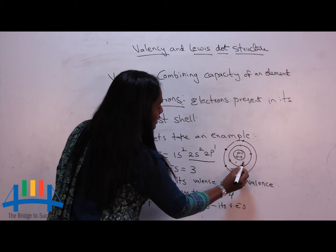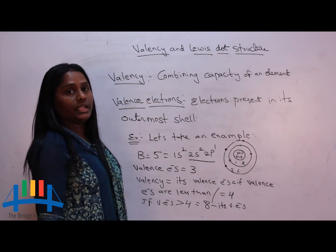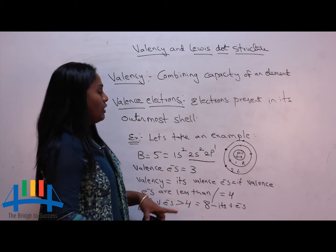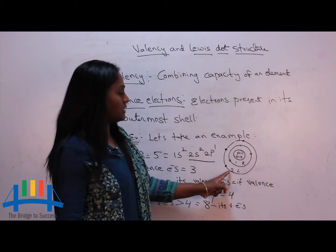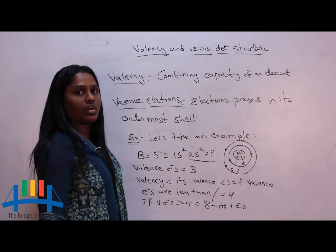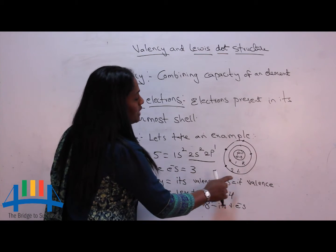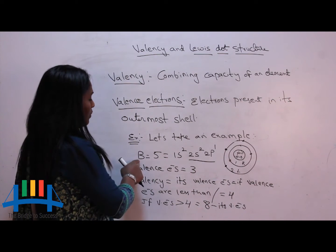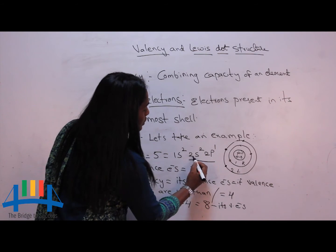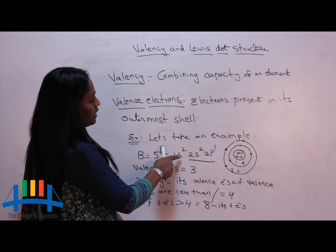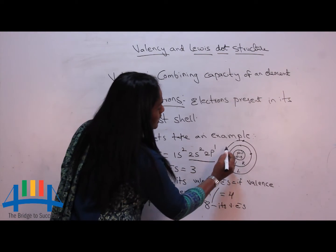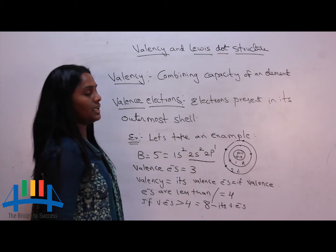the first shell, that means K shell, can accommodate only 2 electrons. That is why I wrote only 2, and we go to the next shell, the second shell called L shell. According to Bohr's 2n² formula, we can accommodate up to 8 electrons. So for boron with atomic number 5, its configuration is 1s2, 2s2, 2p1 — remaining 3 electrons are placed in the second shell, the L shell.